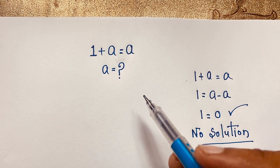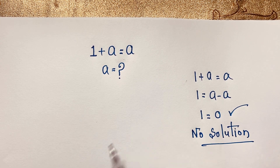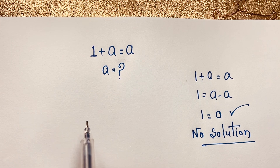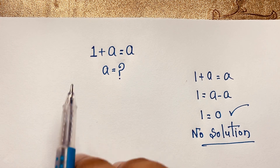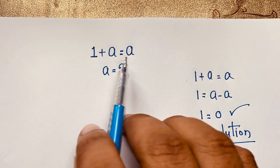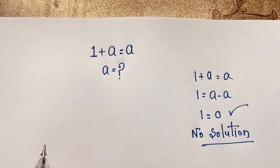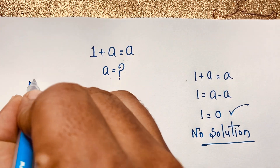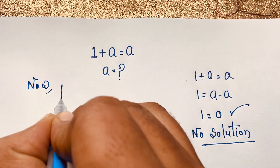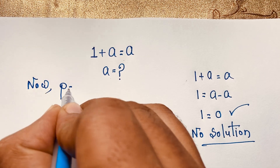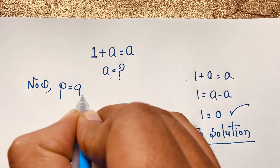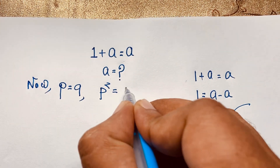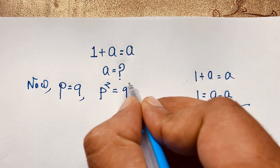I solved this math question just for fun — don't be serious, because it is a funny math problem. Now, 1 plus a is equal to a. If you think p is equal to q, then if I use both sides squared, it will be p squared is equal to q squared.